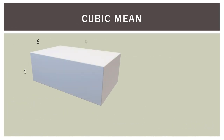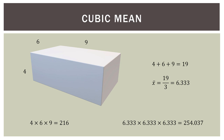Let's take this to three dimensions. Here we have a box with sides of 4, 6, and 9. So 4 times 6 times 9 equals 216 — that's the volume. If we take the average: 4 plus 6 plus 9 equals 19, divided by 3 is 6.333. Now 6.333 cubed gives a volume of 254.037 — that does not equal 216. So taking the average of all three sides and cubing it does not give us the same volume as the actual box.